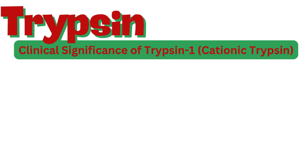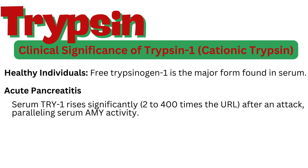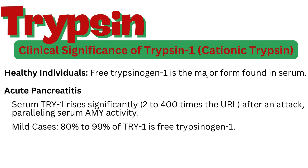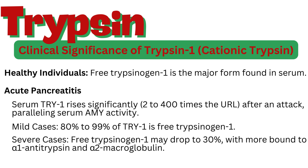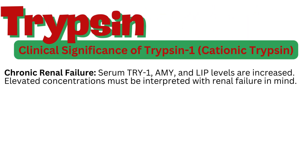Trypsin-1 (cationic trypsin) plays a significant role in several conditions. In healthy individuals, free trypsinogen-1 is the major form found in serum. In acute pancreatitis, serum trypsin-1 rises significantly — 2 to 400 times the URL — after an attack, paralleling serum AMY activity. In mild cases, 80–99% of trypsin-1 is free trypsinogen-1; in severe cases, free trypsinogen-1 may drop to 30%, with more bound to alpha-1-antitrypsin and alpha-2-macroglobulin. In severe cases, mortality rates can be 20% to over 50%. In chronic renal failure, serum trypsin-1, AMY, and LIP levels are increased and must be interpreted with renal failure in mind.